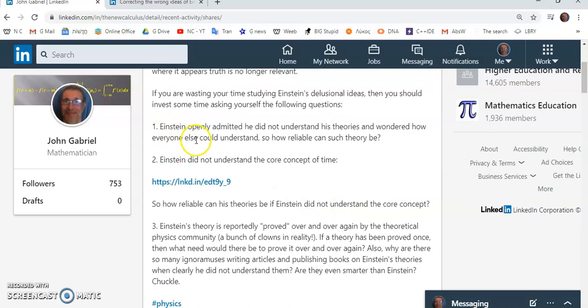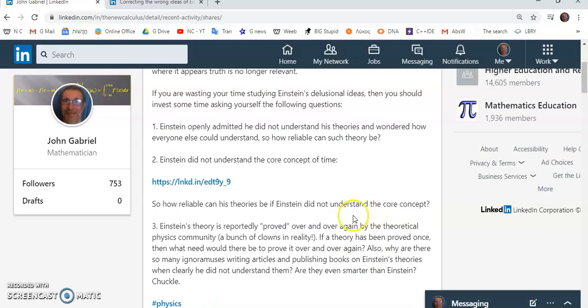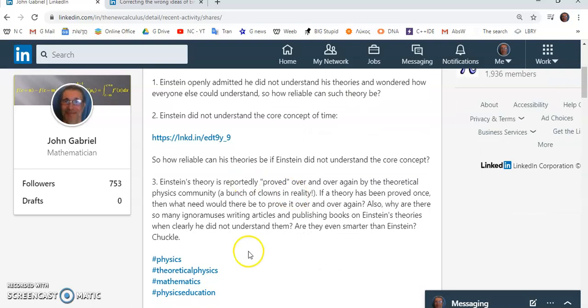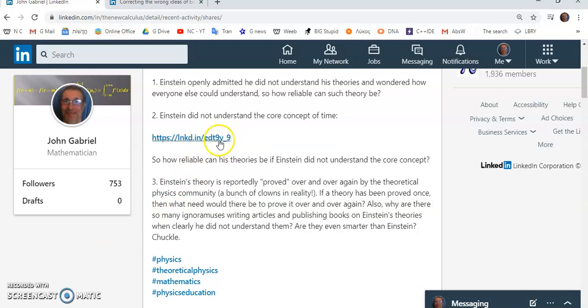First of all, he openly admitted that he did not understand his theories and wondered how everyone else could have understood. How reliable can such theory be? He didn't understand the core concept of time. And in my article, which is at this link here, I explain exactly what is the concept of time. Einstein did not understand the concept of time. If his theories were all about time, how reliable can his theories actually be?